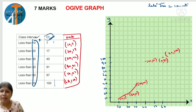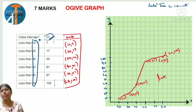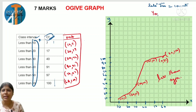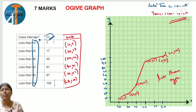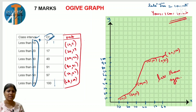For y-axis: 1 cm equals 10 units. The scale on y-axis increases by 10. Now coming to the next question - more than type ogive. The following table gives production yield per hectare of paddy of hundred farms of a village. Draw more than type ogive.